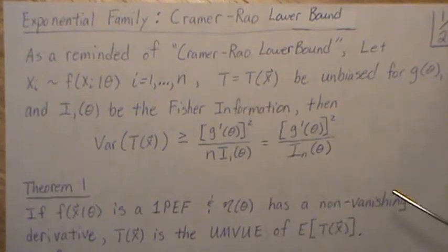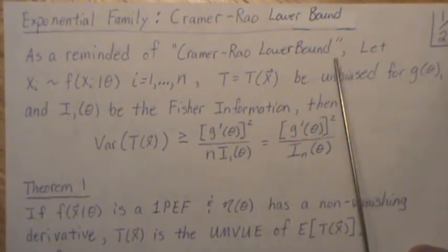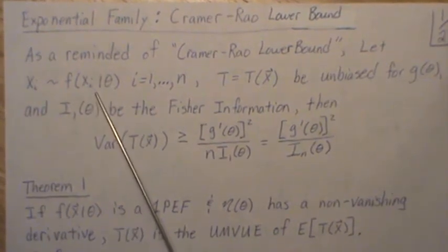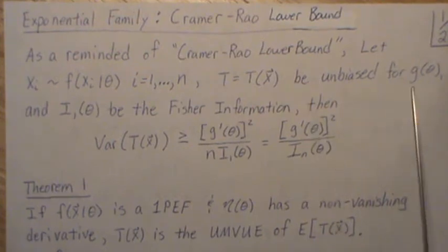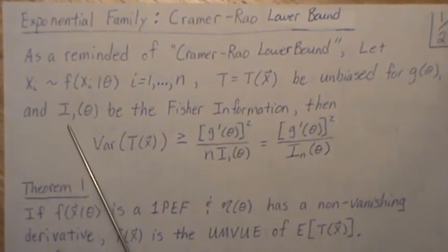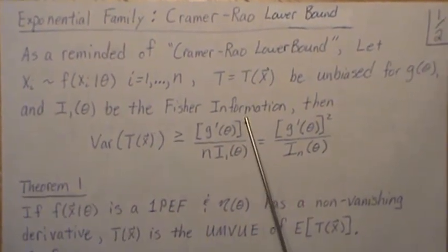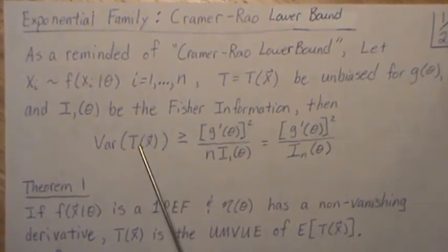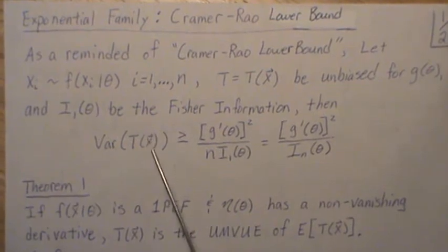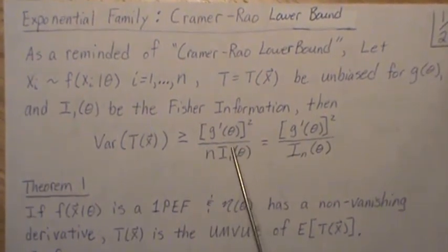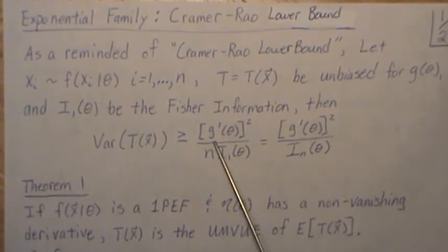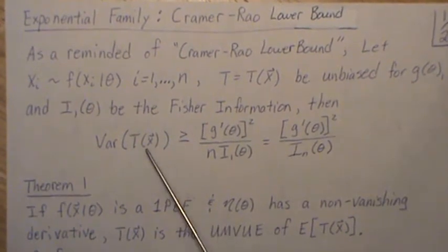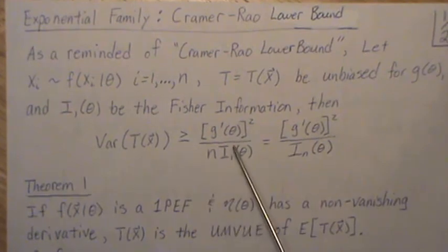We're going to look at the Cramér-Rao lower bound in the Exponential Family. As a reminder of the Cramér-Rao lower bound — and I have a video titled that — let X be distributed with this distribution and it's a sample of size n. We have a statistic T, let it be unbiased for G of theta, and let I of 1 be the Fisher information. Then the variance of our unbiased estimator is bounded below by this quantity. The Fisher information can be thought of as from a sample size 1 times n, or just the Fisher information from a sample size n. It's bounded below by a constant, and to me that's remarkable that any estimator we have is never below this quantity.